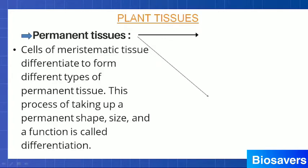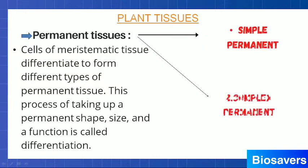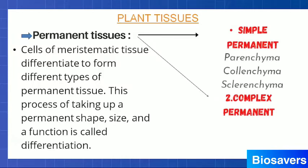Permanent tissues are also of two types — simple permanent tissue and complex permanent tissue. In simple permanent tissue, all the cells present are of the same type — one type of cell. But in complex permanent tissues, the cells present are of different types. So let's see which are the simple permanent tissues and which are the complex permanent tissues.